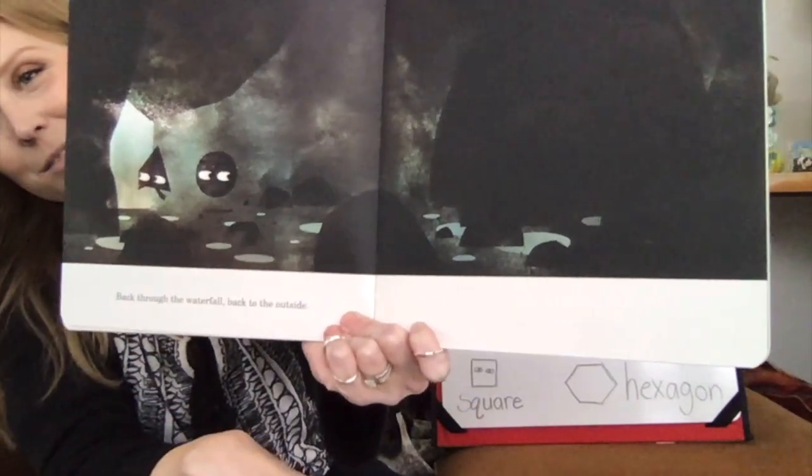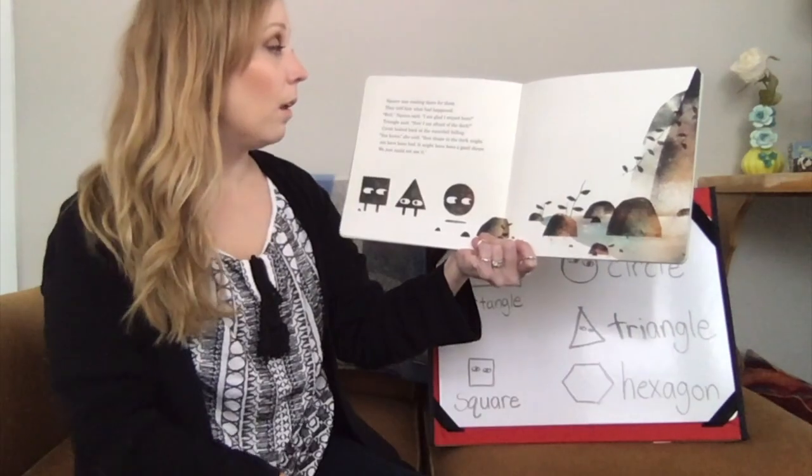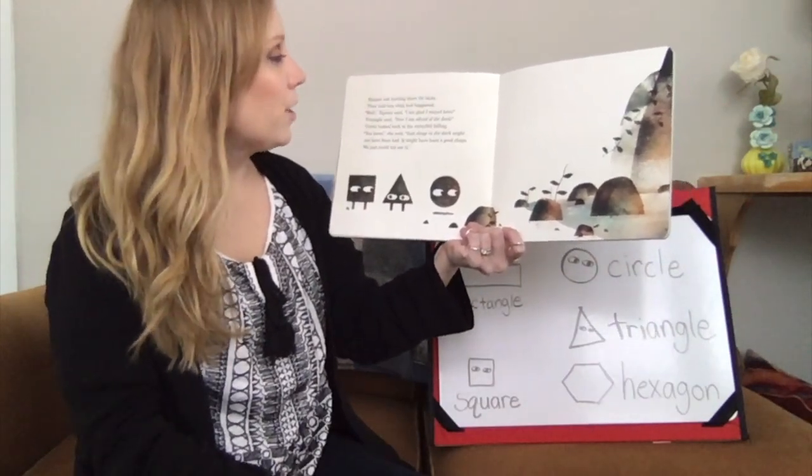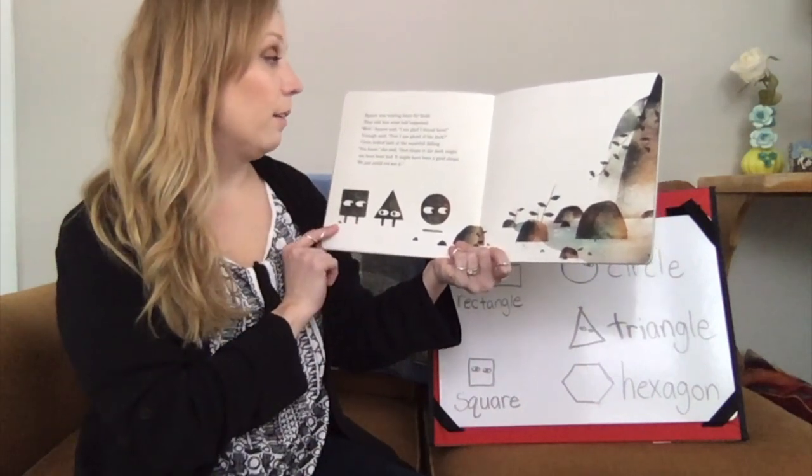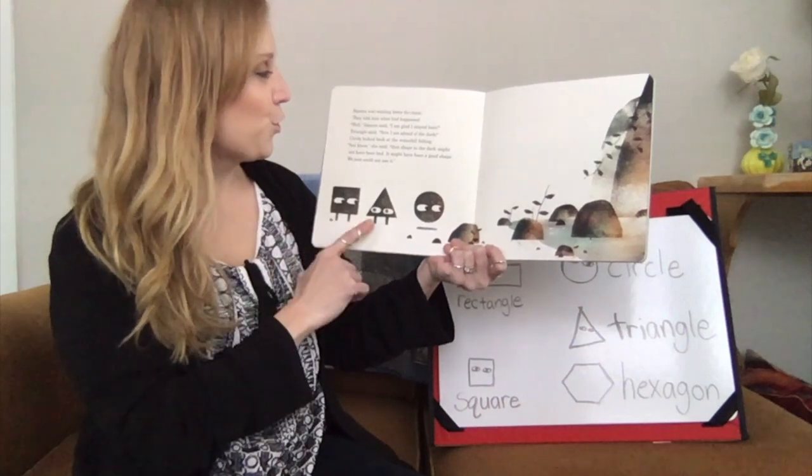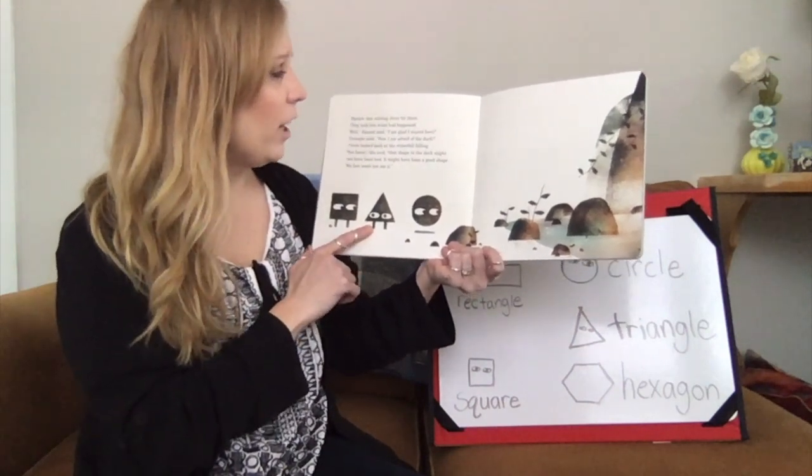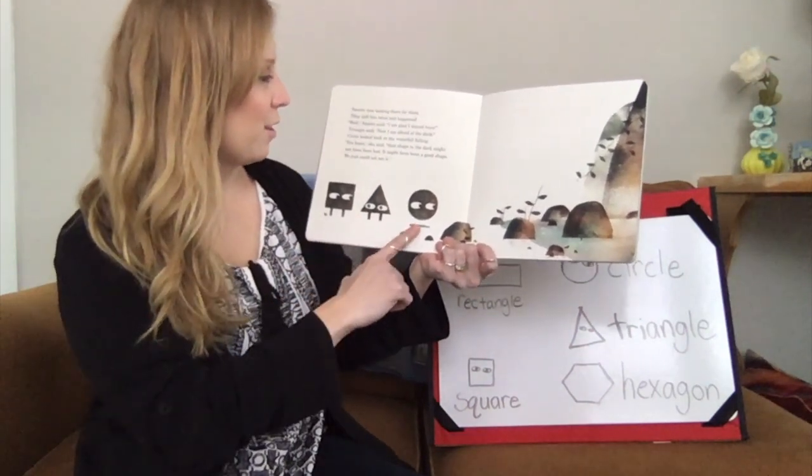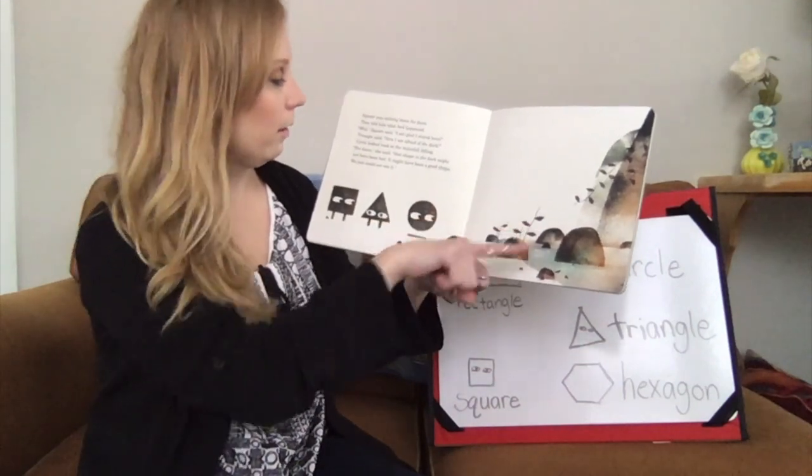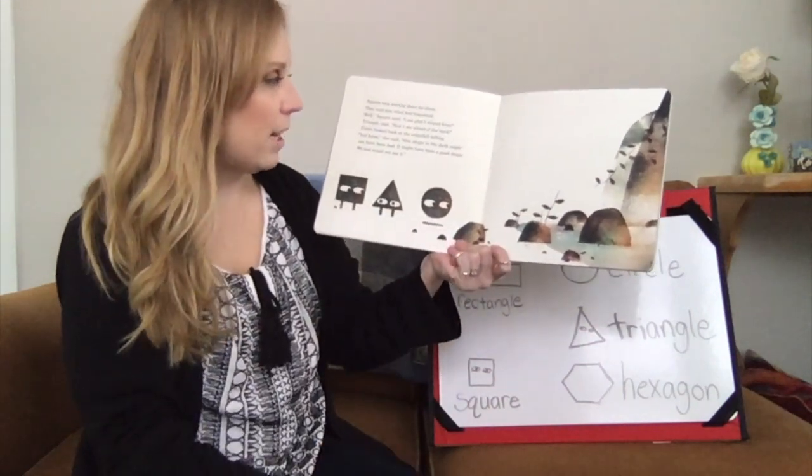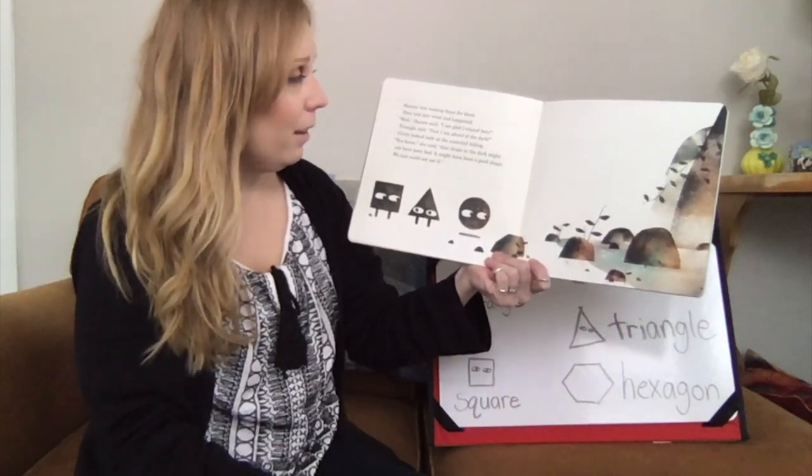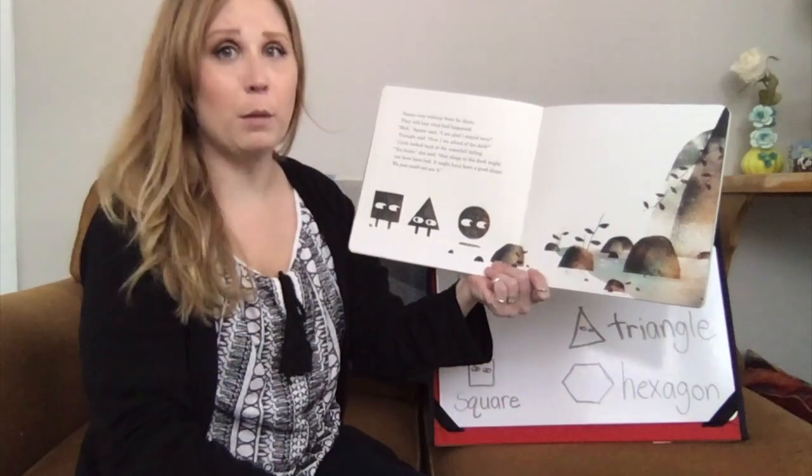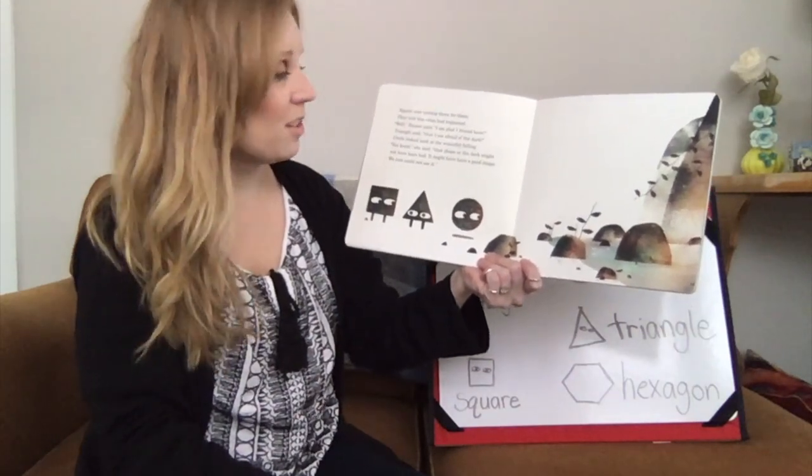Circle's looking back. Square was waiting there for them. They told him what had happened. Well, Square said, I am glad I stayed here. Triangle said, now I am afraid of the dark. Circle looked back at the waterfall falling. You know, she said, that shape in the dark might not have been bad. It might have been a good shape. We just could not see it.